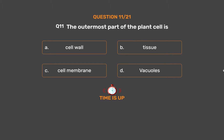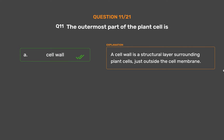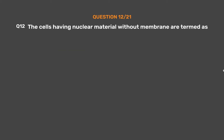The correct answer is Option A: Cell wall. A cell wall is a structural layer surrounding plant cells, just outside the cell membrane.